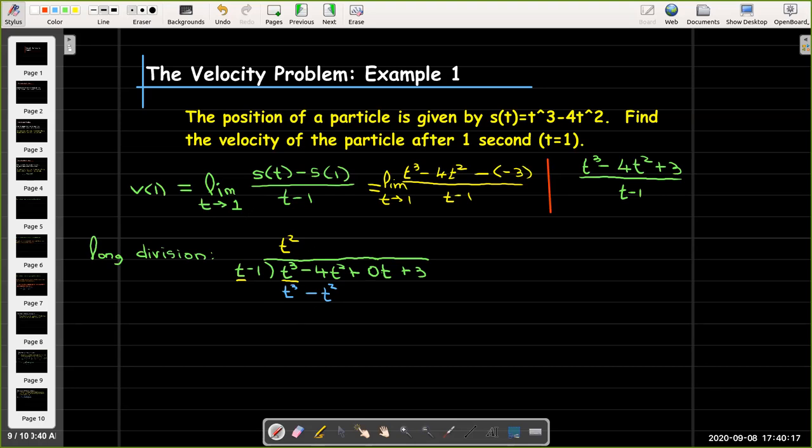All right, so now back to where I was. I was going to do the subtraction here. And the subtraction, I have to remember that I'm changing the sign. So it would be t cubed minus t cubed to 0. Negative 4t squared plus t squared is going to give me negative 3t squared. And then I could go ahead and bring down the plus 0t.